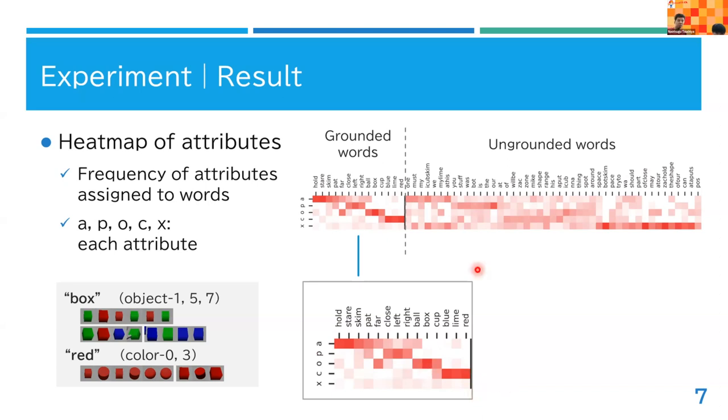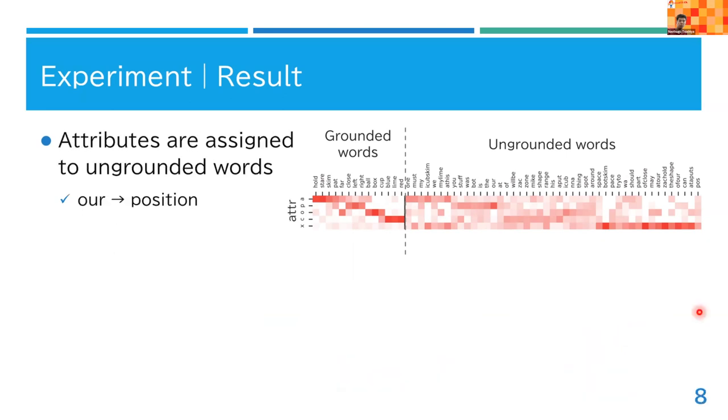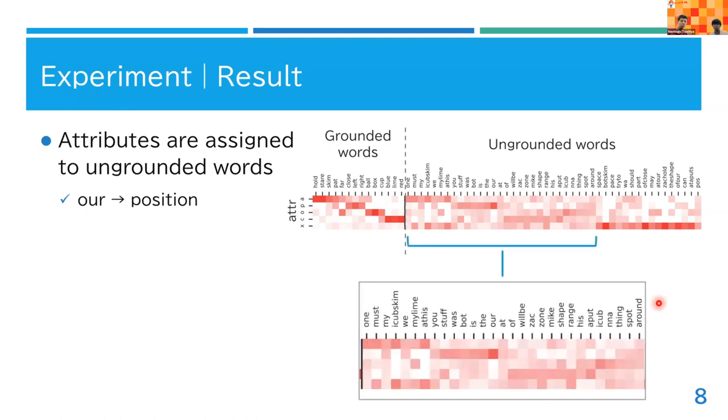Let us focus on ungrounded words - words not linked to sensory information. Function words like 'may' or 'can' and segmentation errors are assigned attribute X. However, contrary to my expectations, some words were assigned other attributes.